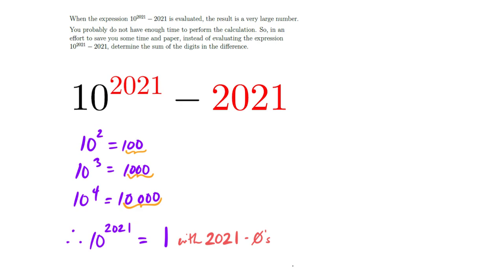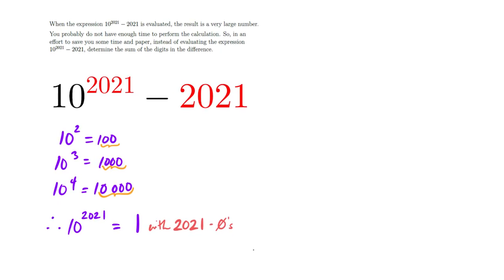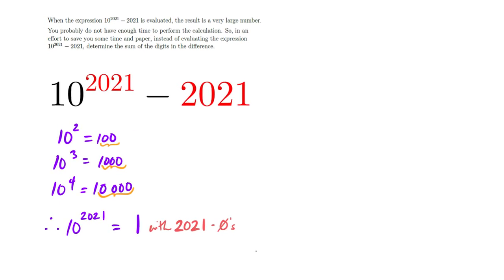Now I need to figure out the subtraction part. I'm going to look at taking a power of 10 and subtracting 2,021. If I take 10 to the 4th, which is 10,000, and subtract 2,021 — subtract 2,000 to get 8,000, then subtract another 21 — that gives me 7,979.